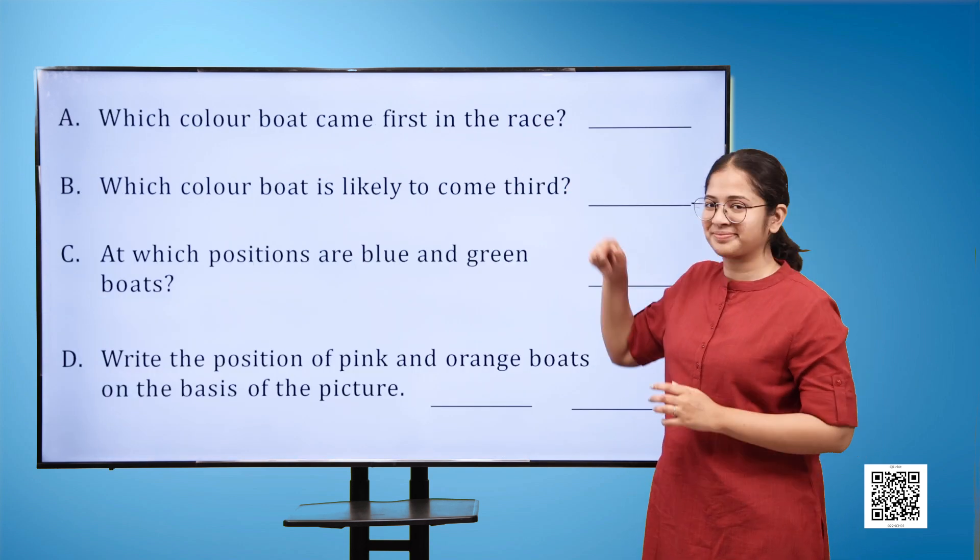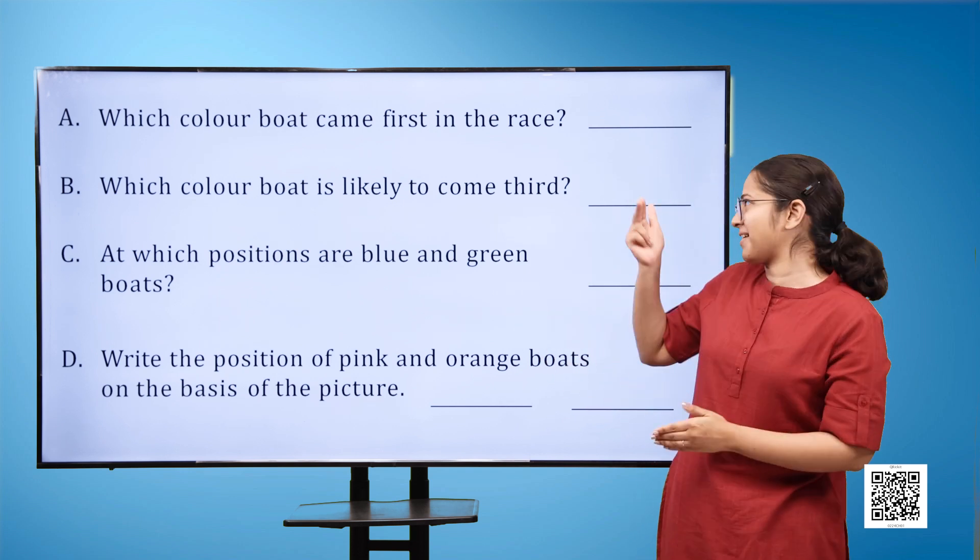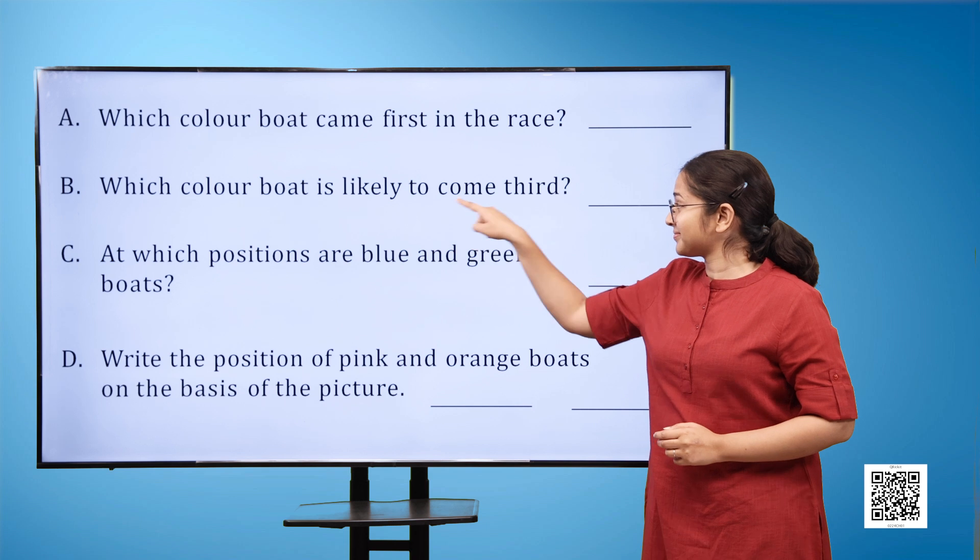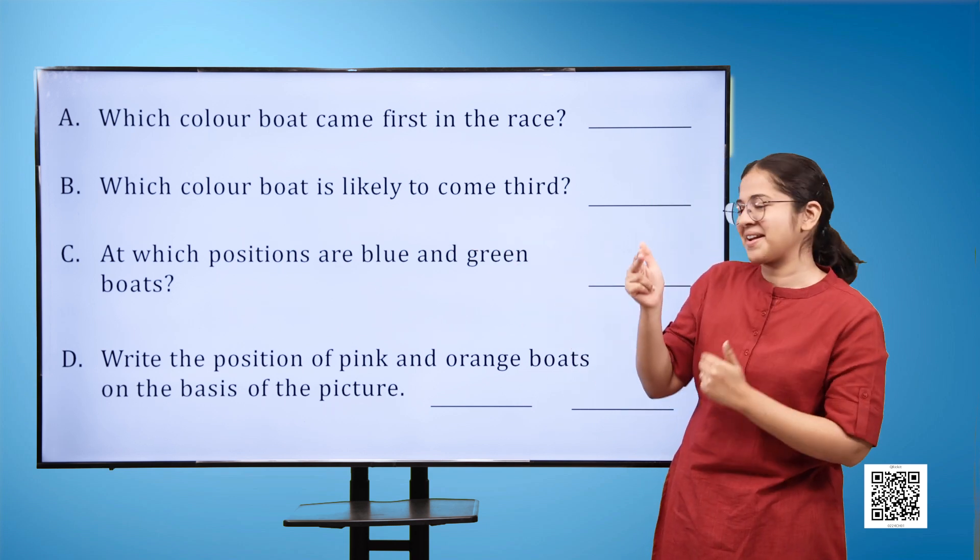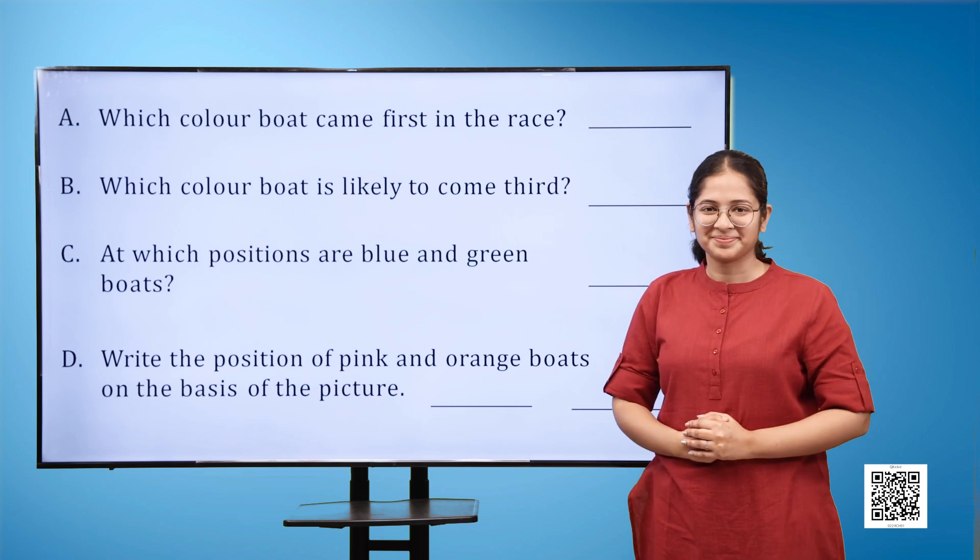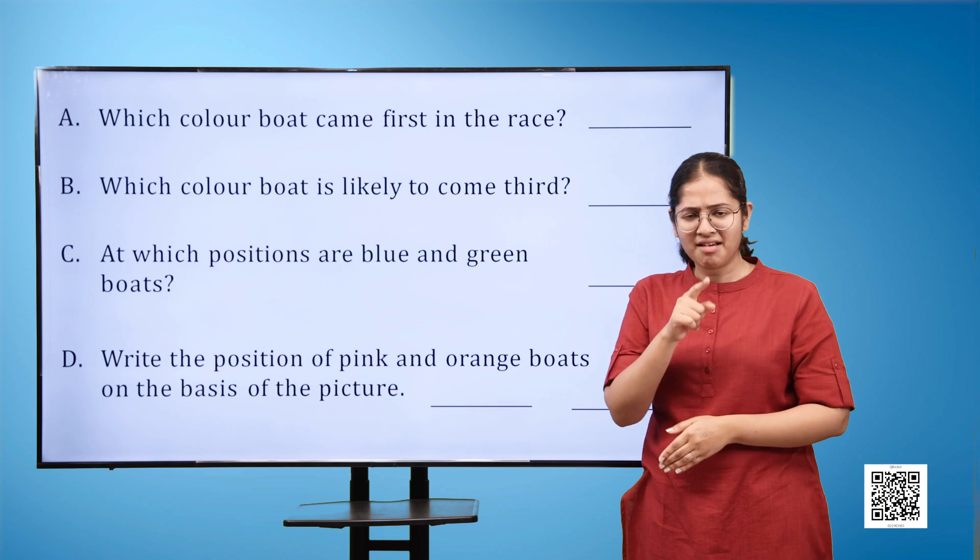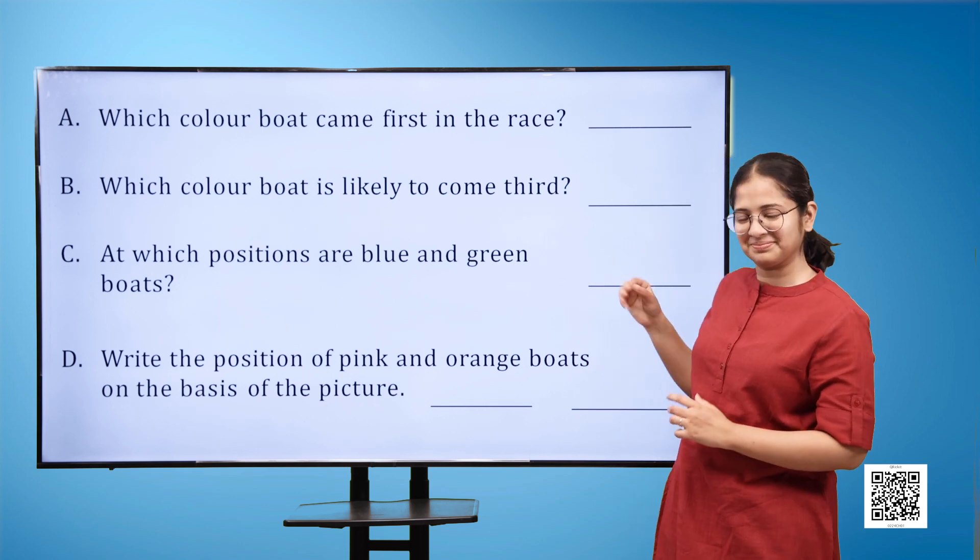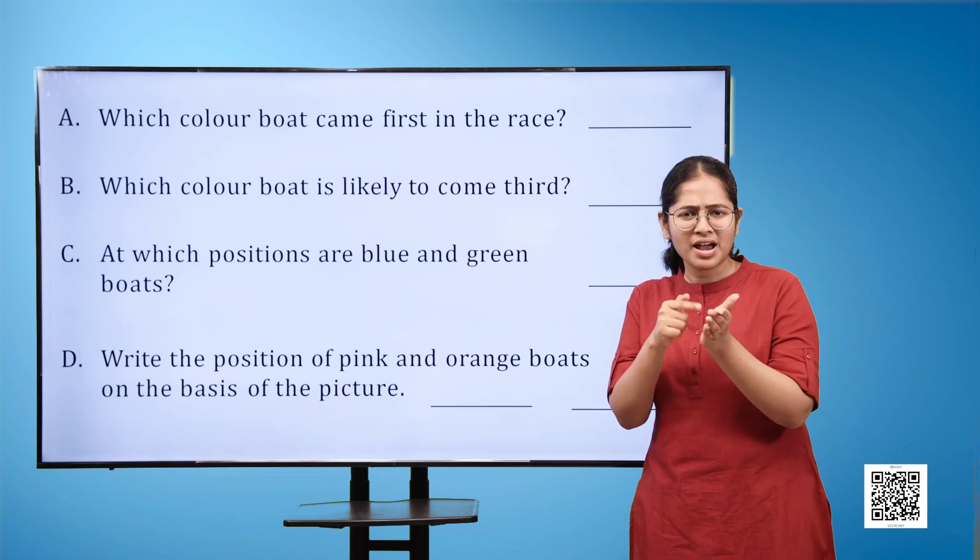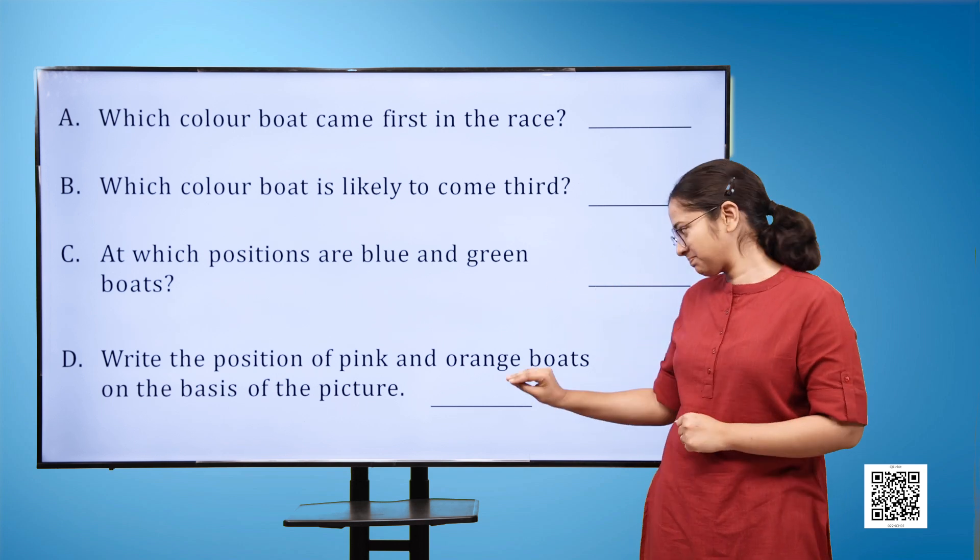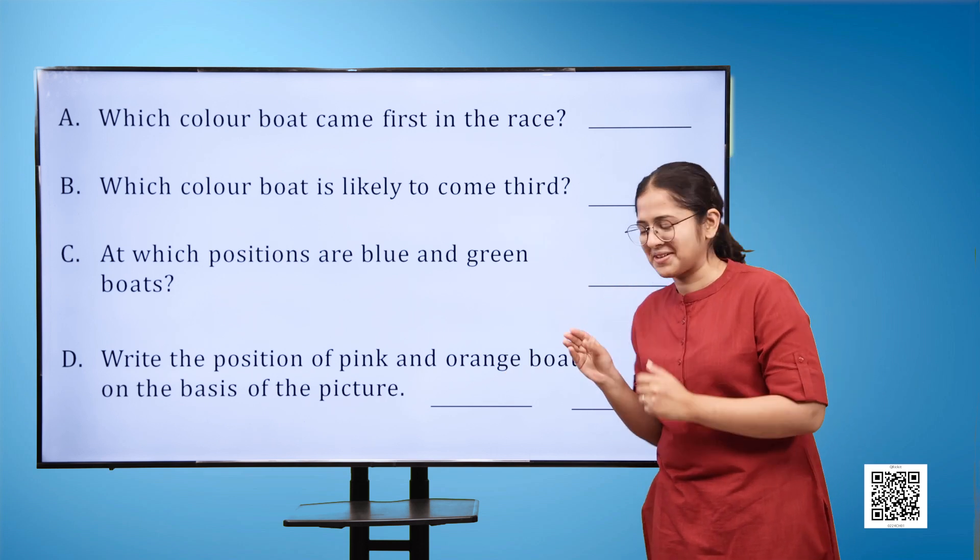A) Which color boat came first in the race blank. B) Which color boat is likely to come third blank. C) At which positions are blue and green boats blank. D) Write the position of pink and orange boats on the basis of the picture blank.